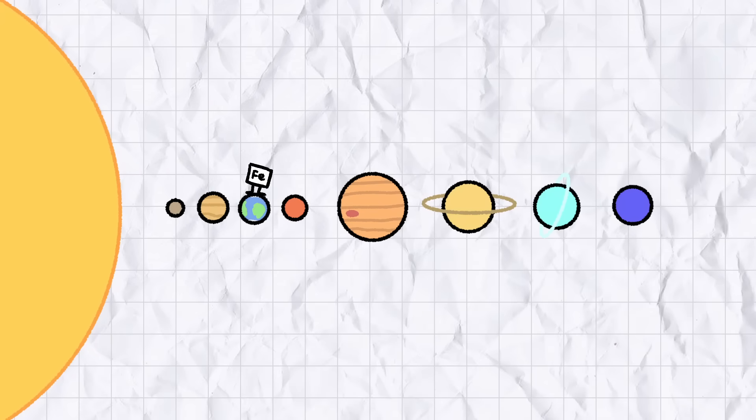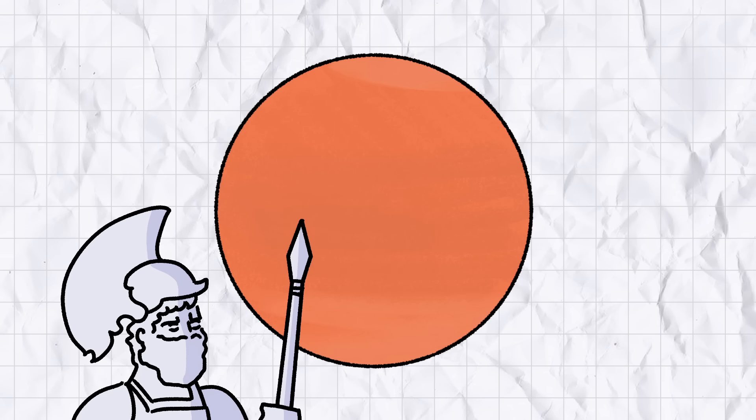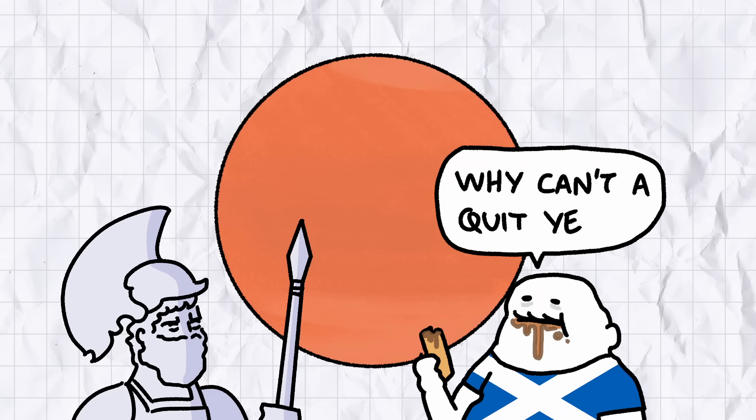Not content with being the most abundant element on Earth, iron's reign of terror has spread to all of the other planets in the solar system, chief among them Mars, named after the Roman god of war and the deep-fried snack terrorising the waistlines of the Scottish.